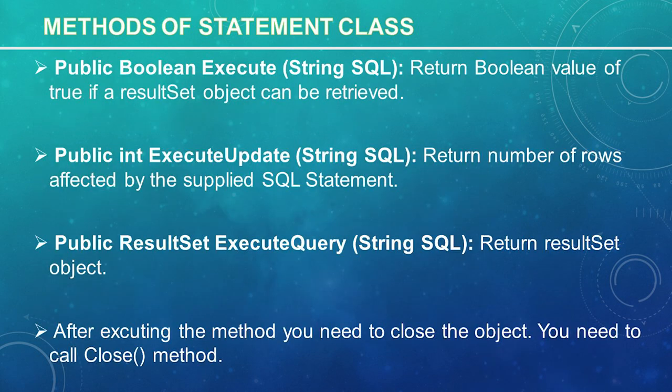Once you create a statement object, you can use it to execute an SQL statement with one of three execute methods. The first one is public boolean execute(String SQL). This method returns a boolean value of true if a result set object can be retrieved, otherwise it returns false. Use this method to execute SQL DDL statements or when you need truly dynamic SQL.